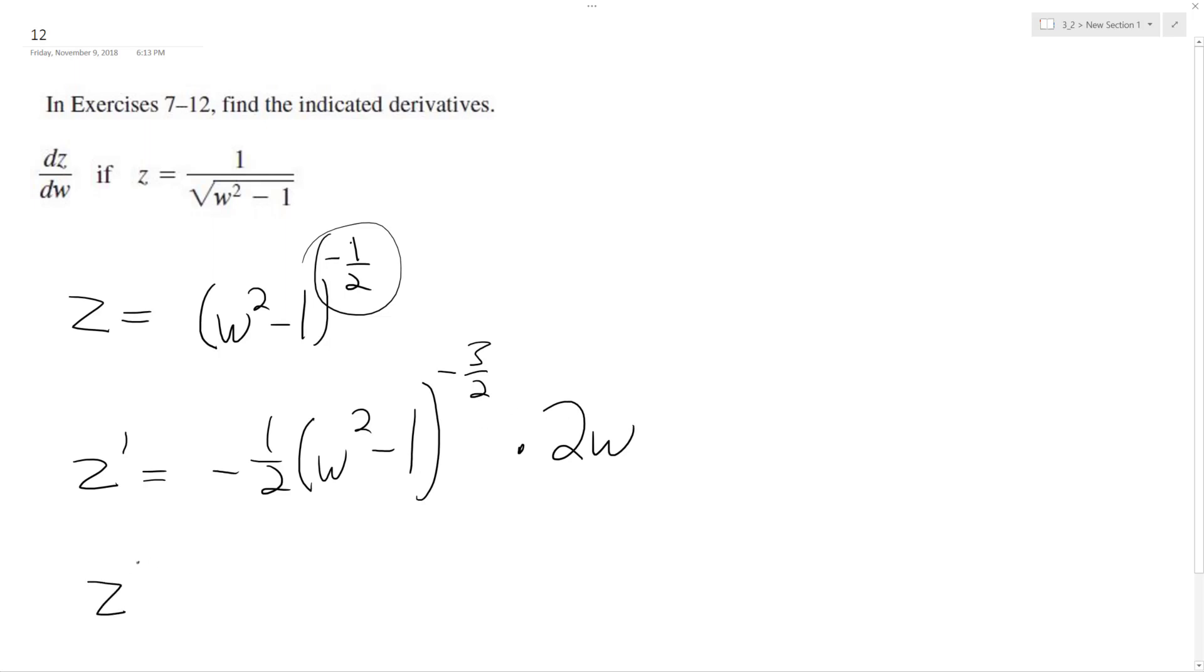So essentially z prime is going to be equal to negative. Then the 1 half and the 2 cancel out. Negative w and then w squared minus 1 raised to the negative 3 halves.